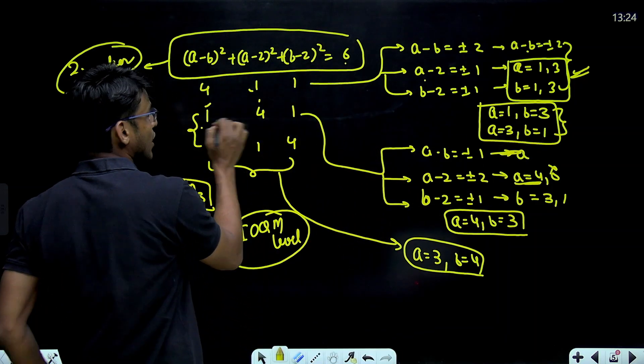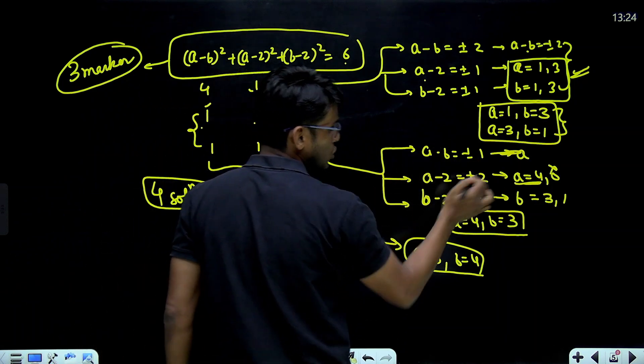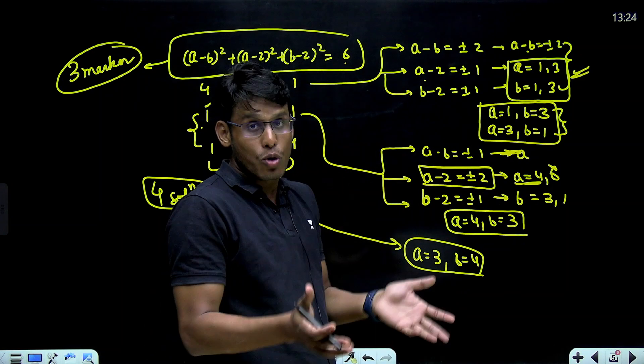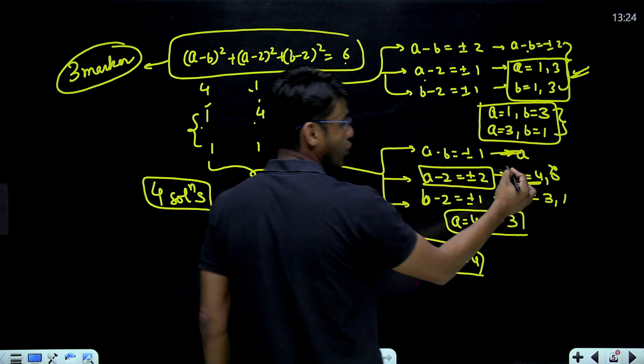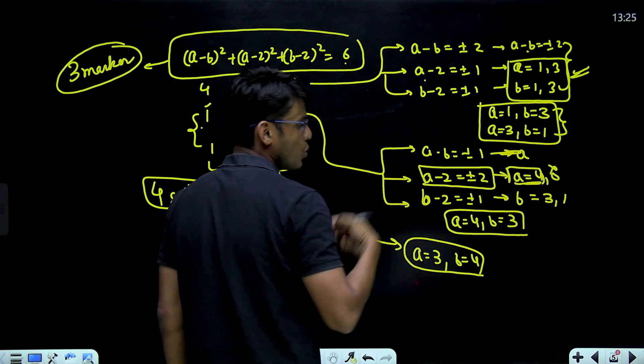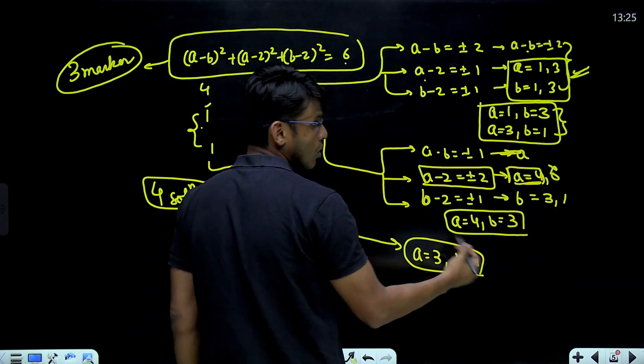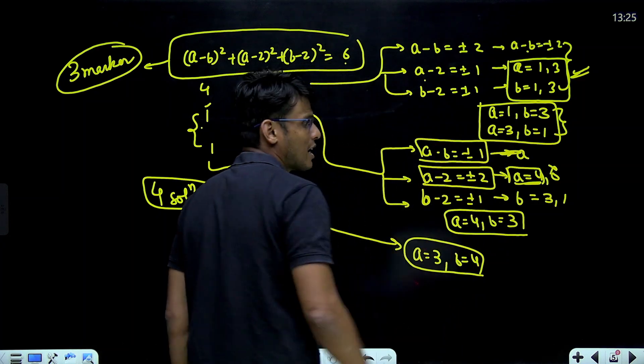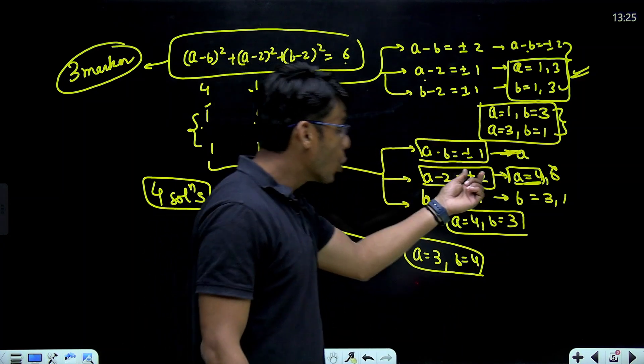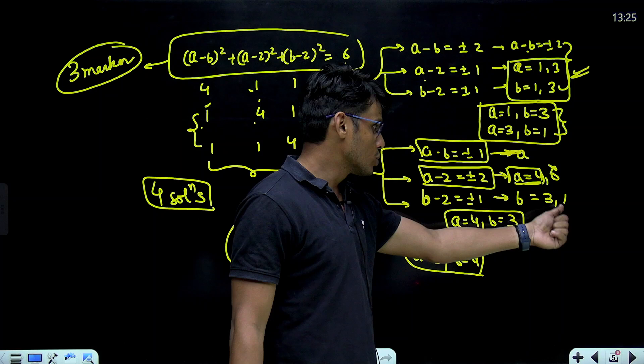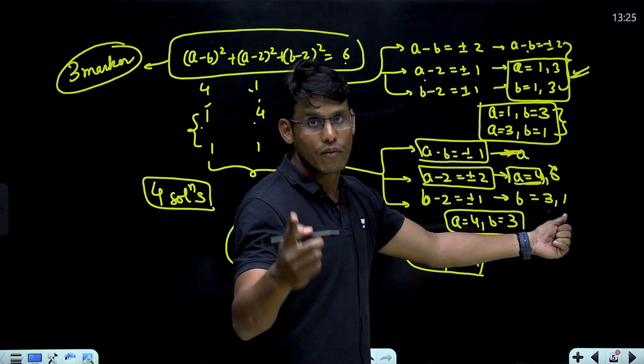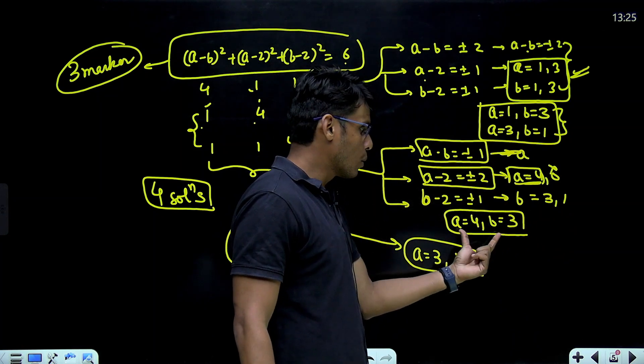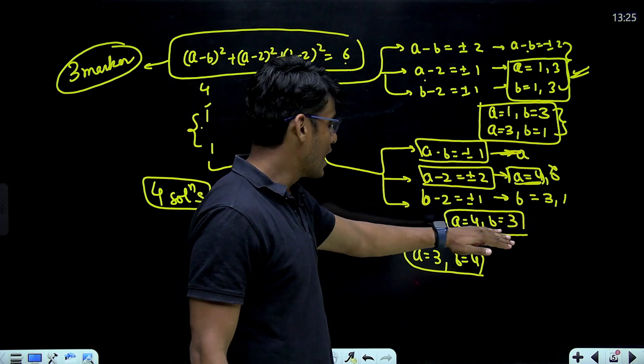In the second, 1, 4, 1. a minus b is plus minus 1. a minus 2 is plus minus 2. Now, when we solve this, you are getting a equals 4 and a equals 0. Since a was natural number, 0 is automatically rejected, you get a equals 4. b minus 2 equal to plus minus 1, b equals 3 and 1. Now, since a was uniquely 4, you have to make sure that a minus b is plus minus 1. So, you can only select b to be 3. Because if you select b equals 1, a minus b comes out to be 3, which is not possible. So, a minus b, 1, b equals 3, a equals 4, b equals 3. So, in this condition, a equals 4, b equals 3.